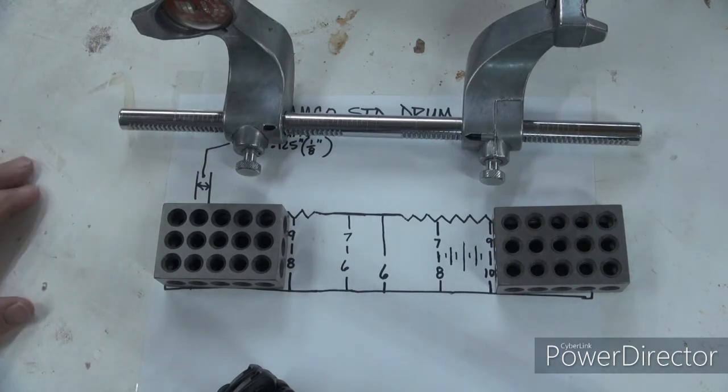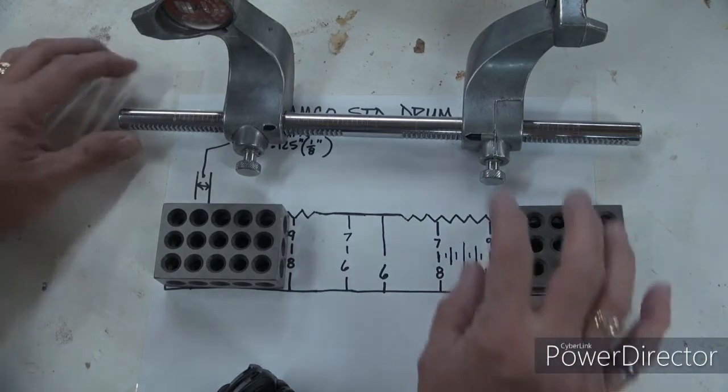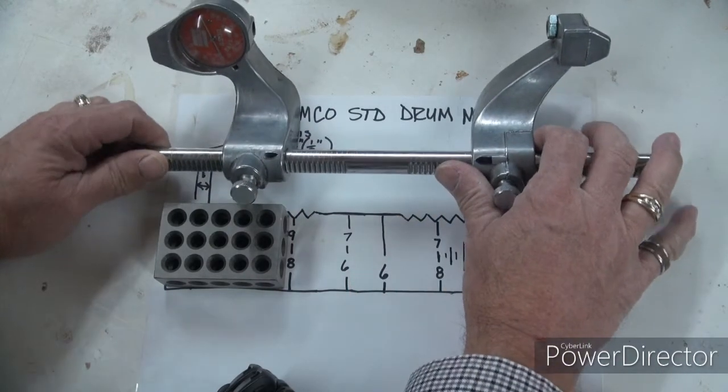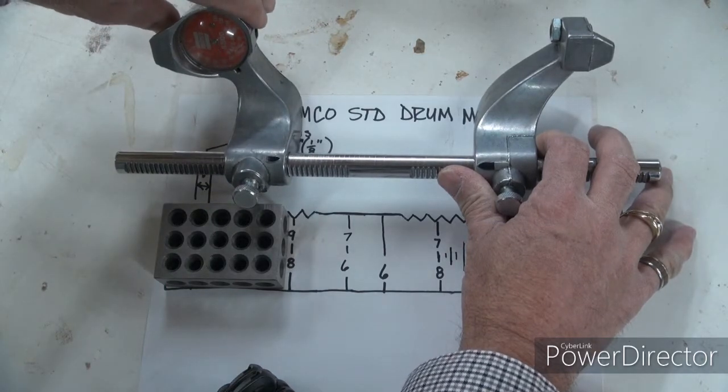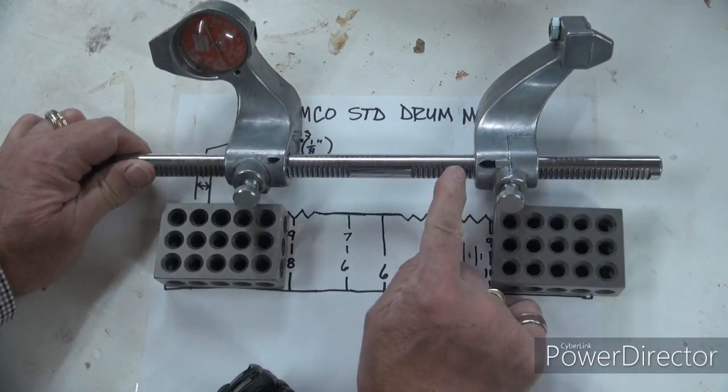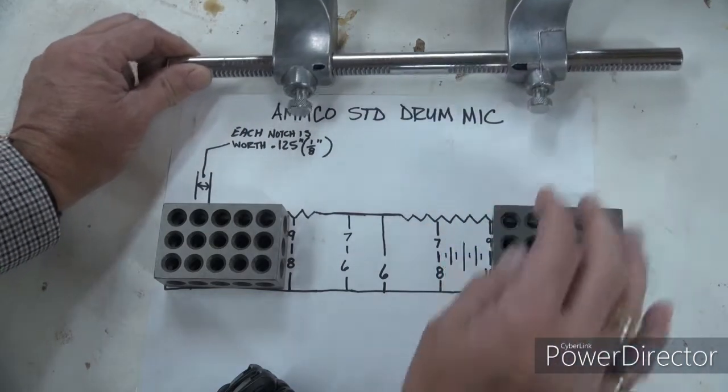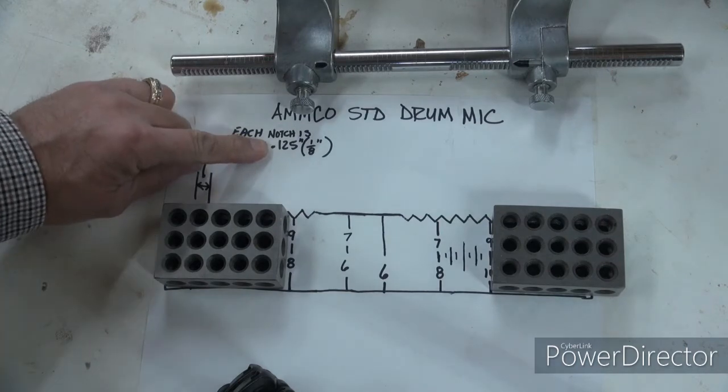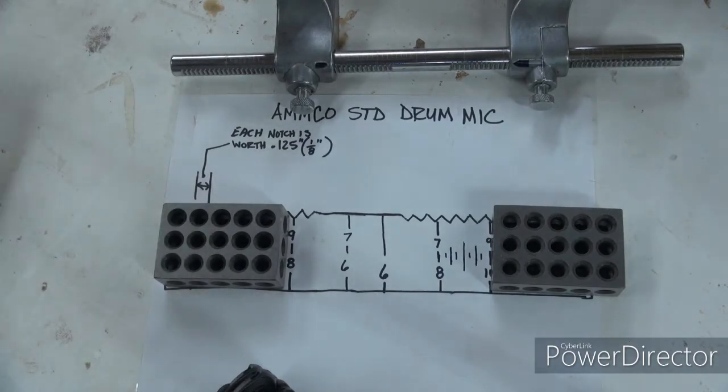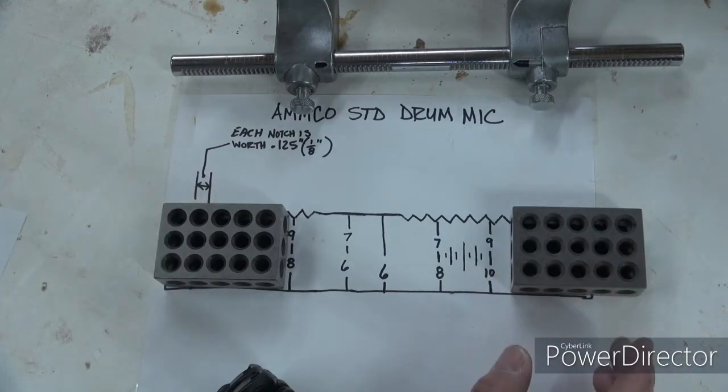You've got that number dialed in, but it's a little bit bigger than, let's say, a nine inch. We have to move these out one click at a time until we start to depress this little button on the end so we can read the final number. Every time I move that out one notch or one click, I'm moving out 0.125 of an inch or an eighth of an inch.